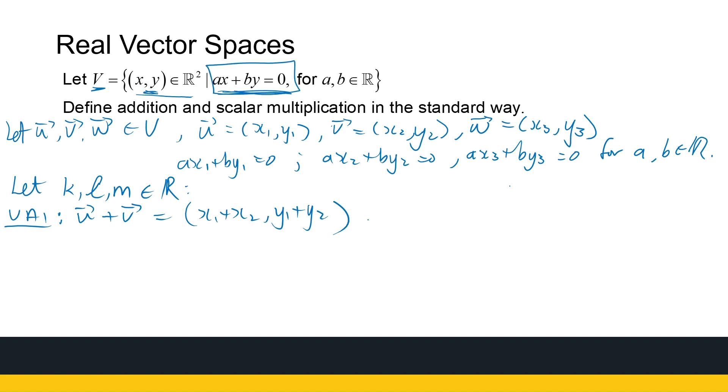Well, let's look at it. So then a times (x1 plus x2) plus b times (y1 plus y2) gives me ax1 plus ax2 plus by1 plus by2. Well, I already know that ax1 plus by1 gives me 0. ax2 plus by2 gives me 0. So that gives me 0. So therefore, I can see that u plus v is in my set V. So that's how you're going to test all the axioms.